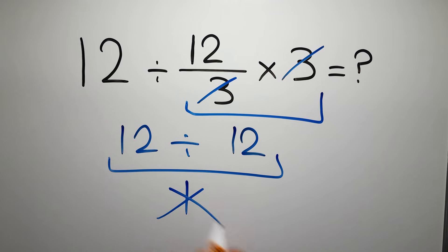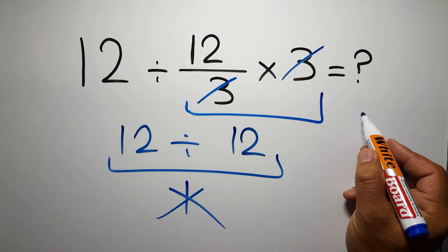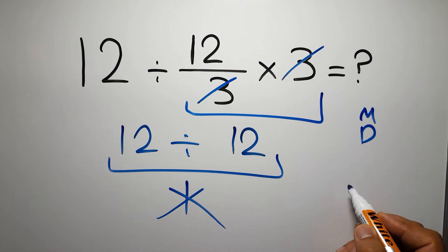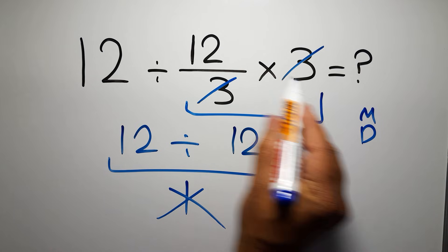But this answer is not correct, because according to the order of operations, multiplication and division have equal priority, and we have to work from left to right.